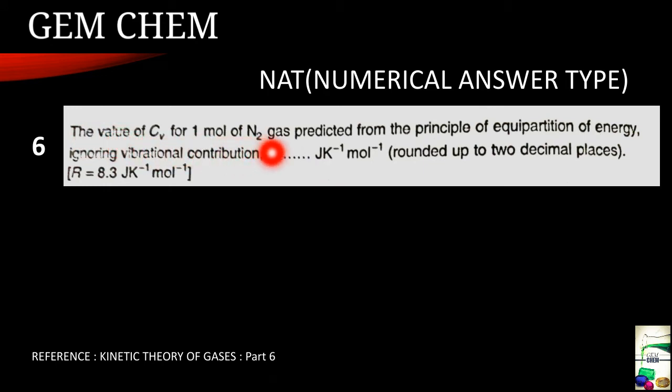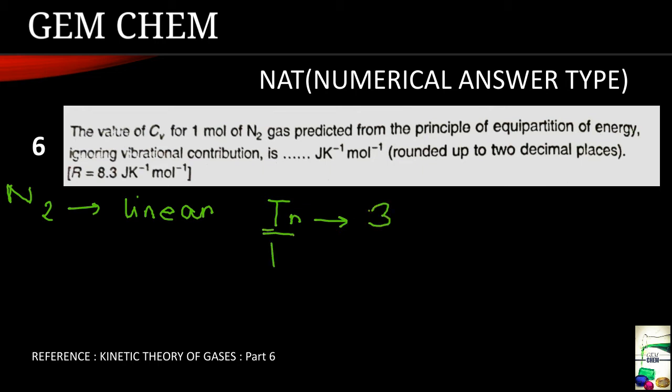Now let us see the question. The value of CV for 1 mole of N2 gas predicted from the principle of equipartition of energy ignoring the vibrational contribution is dash Joule per Kelvin per mole and it is rounded up to 2 decimal places and the R value is also being given. So we know that since N2 is given, N2 is a linear molecule. So number of degrees of freedom for translational case it is 3, for rotational case it is 2, and for vibrational case it is 3N minus 5 that is 3 into 2, that is 6 minus 5, it is equals to 1.